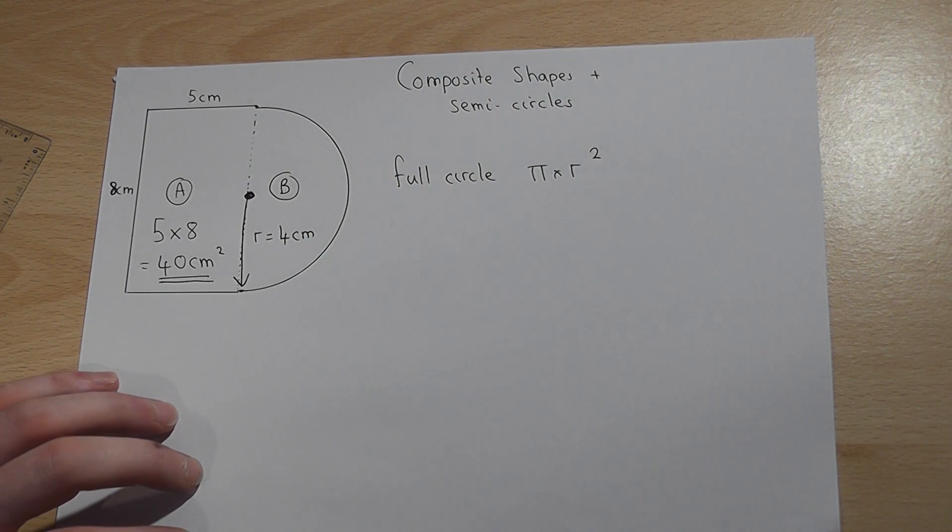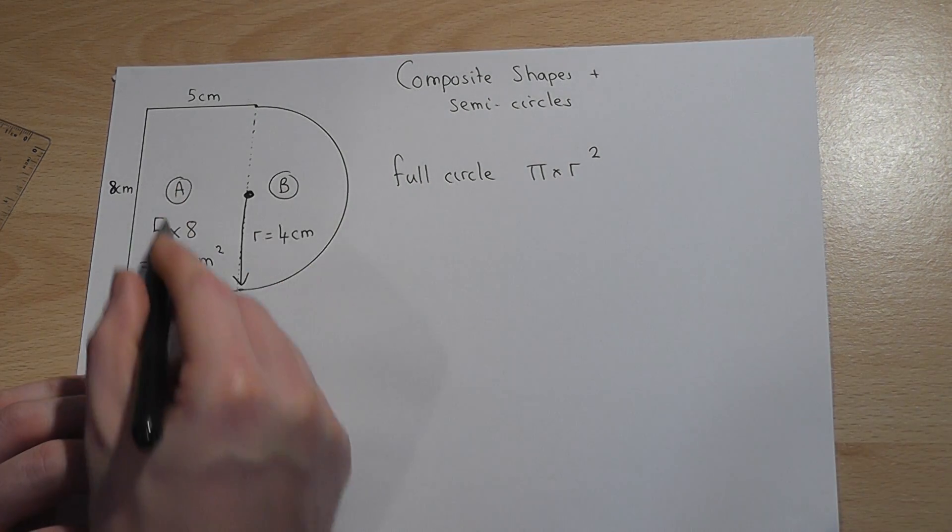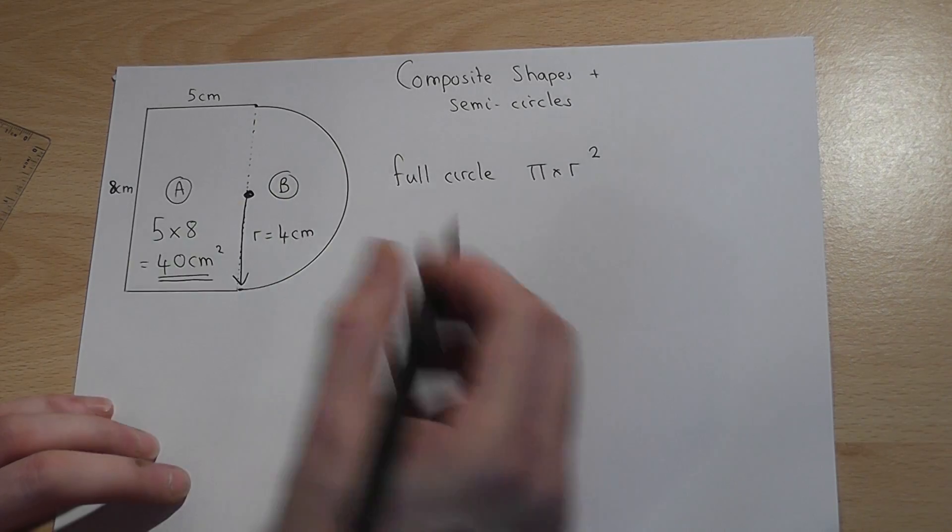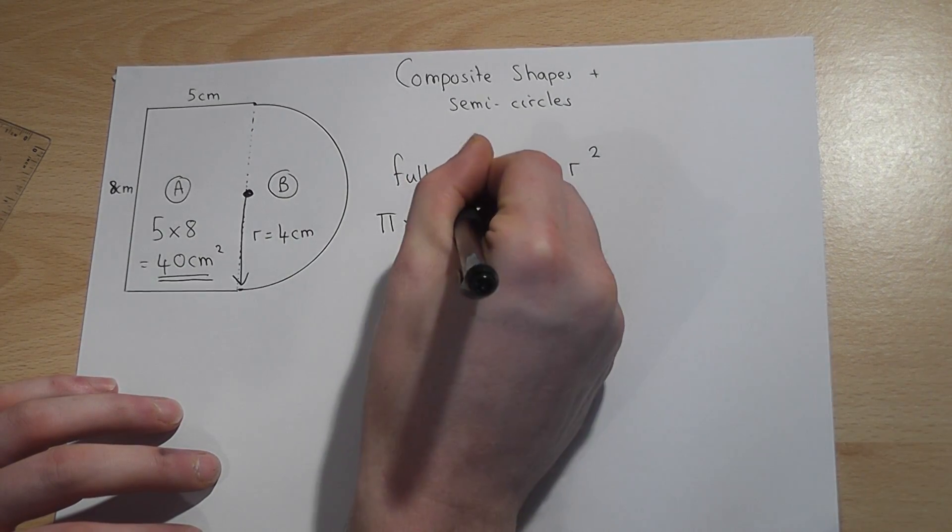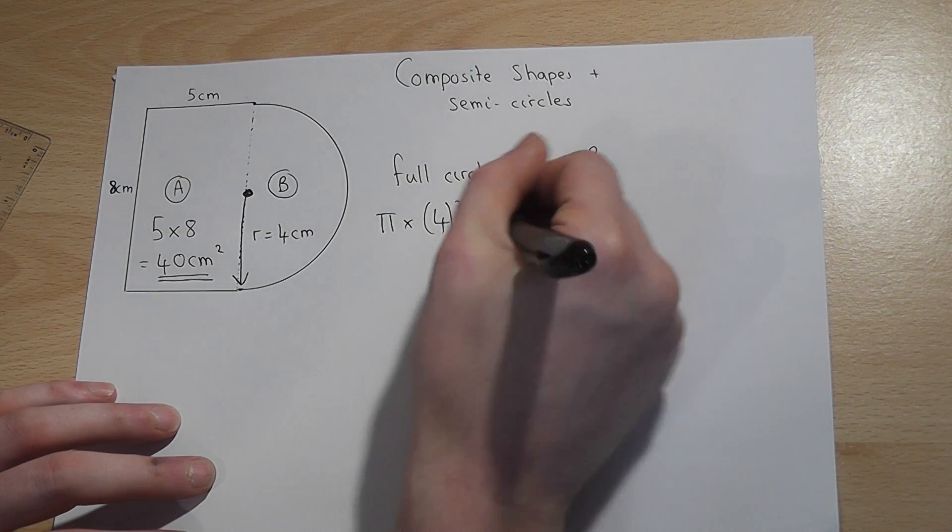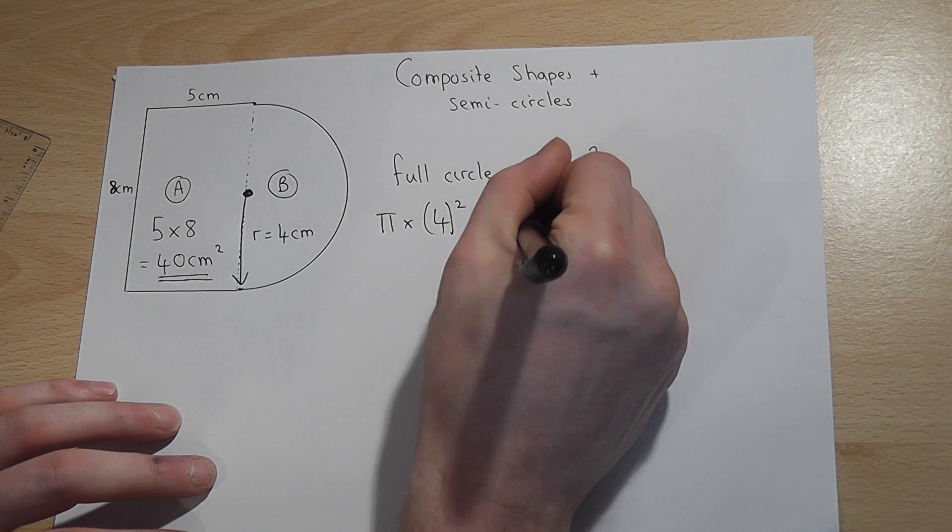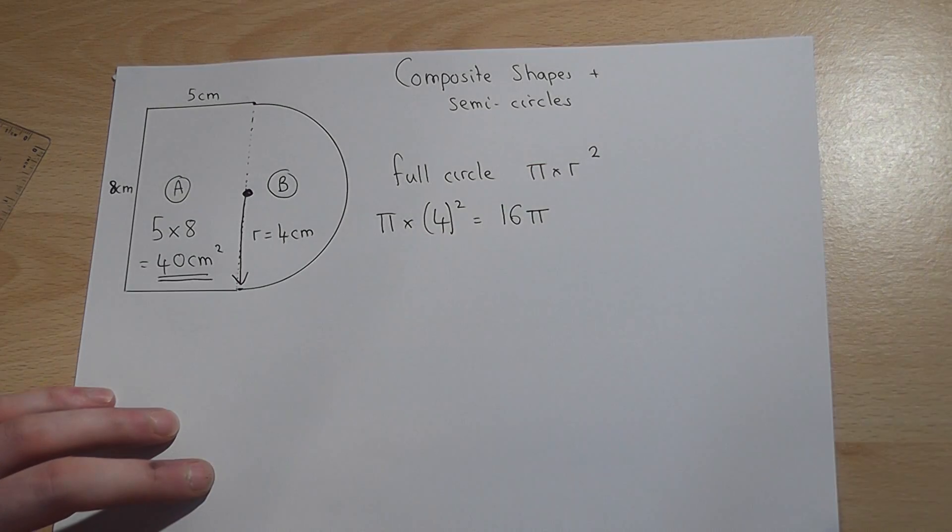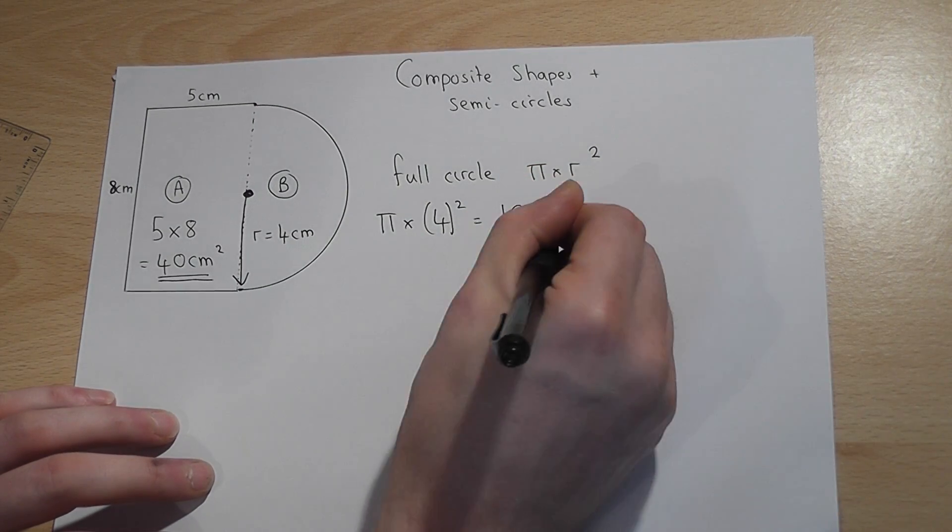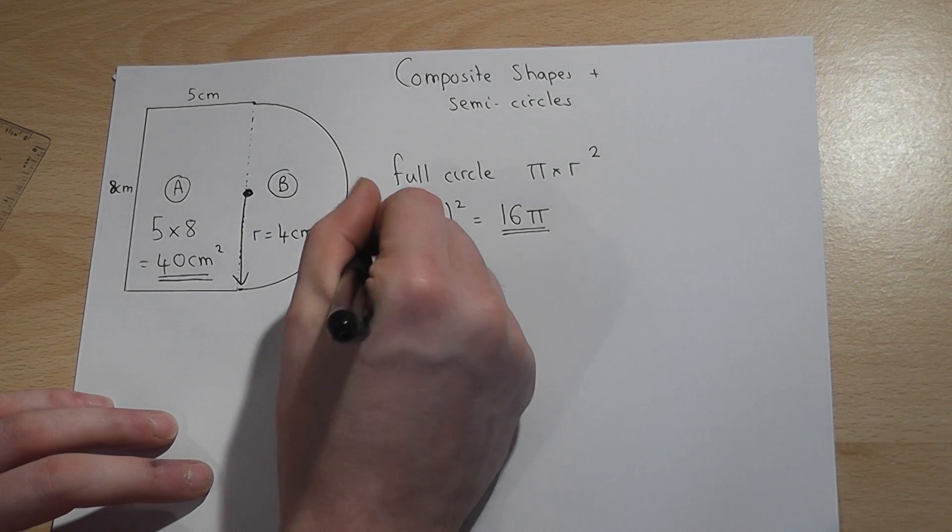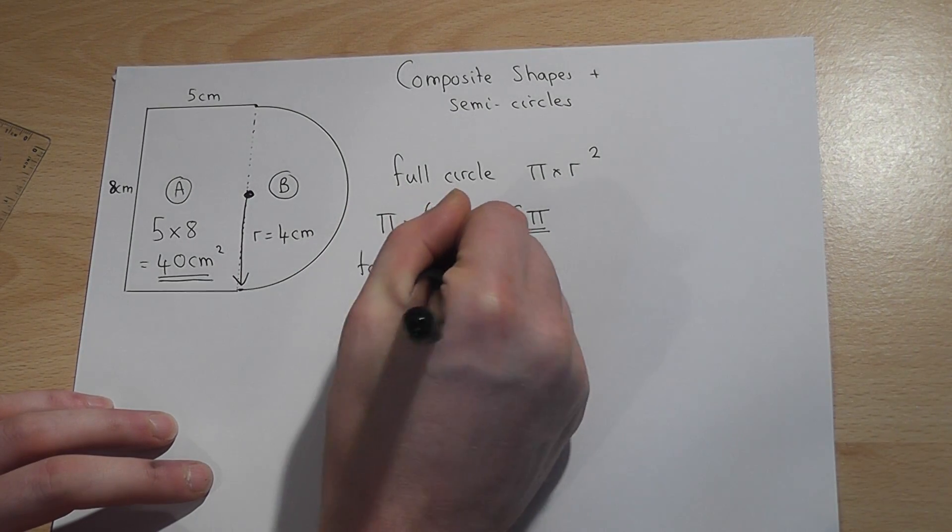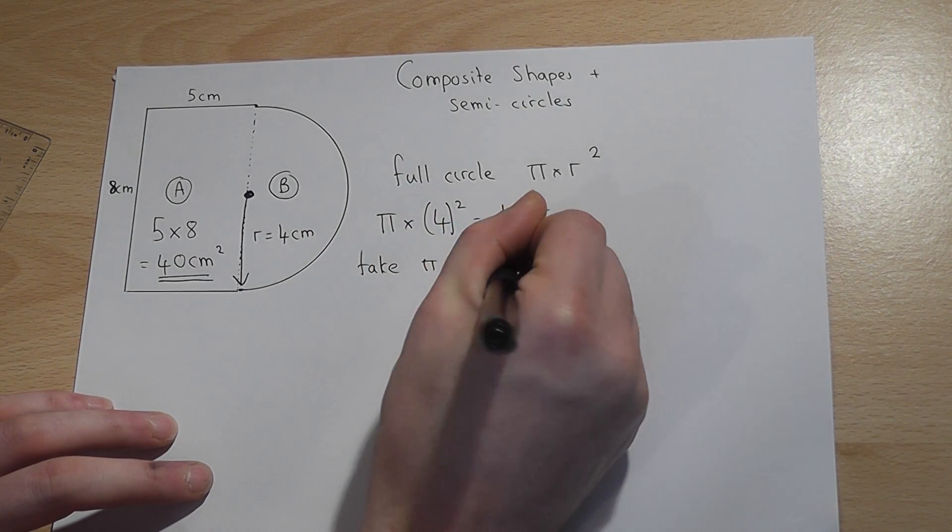So the area of the circle as if it was a full circle would be pi times four squared which equals 16 lots of pi. That's left in terms of pi. However they may say to us take pi to equal 3.14.